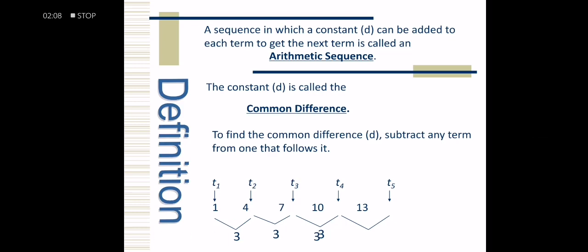To determine the next term of the sequence, we add the common difference to each term. For example, 1 plus 3 is 4, 4 plus 3 is 7, 7 plus 3 is 10, 10 plus 3 is 13. So the next term is 13 plus 3 equals 16, and so on.